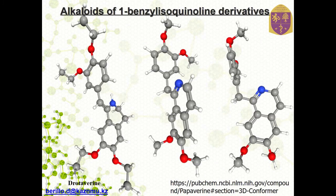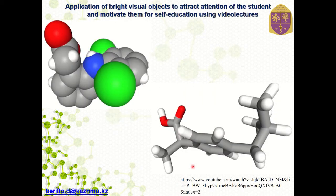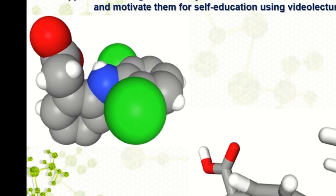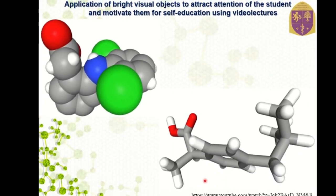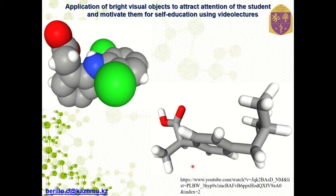One way is to represent the same content in a different way. With a blue color we indicate nitrogen, red color represents oxygen, carbon, and white represents hydrogen. Therefore, when you do this type of illustration, you attract the attention of students and also you can stimulate and motivate them for self-education using various recorded video lectures.